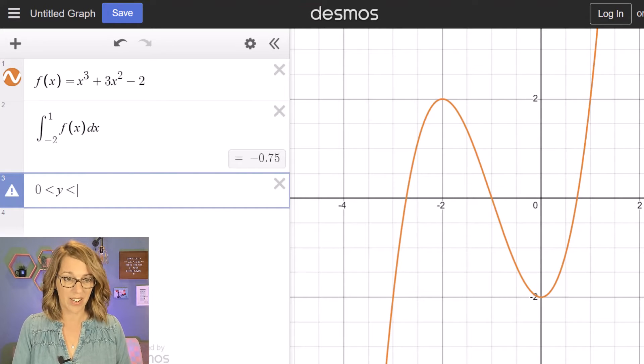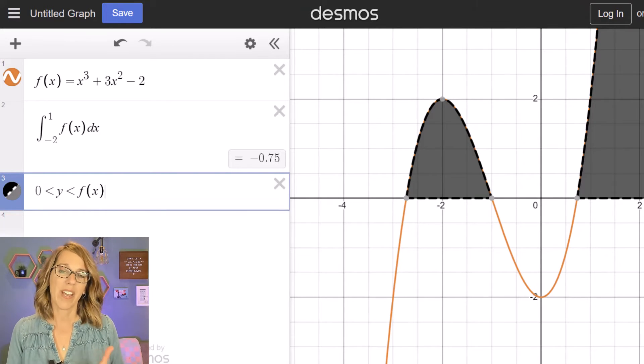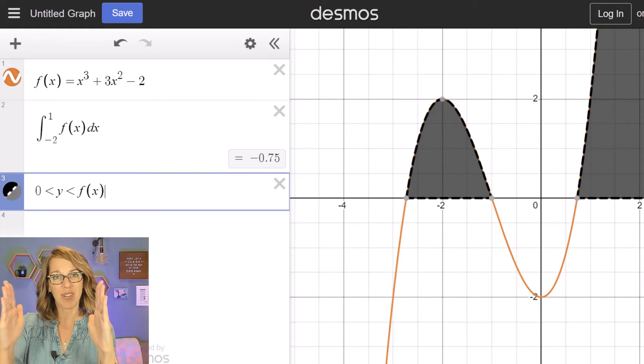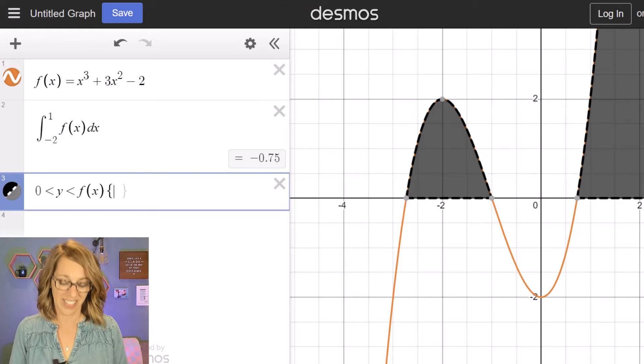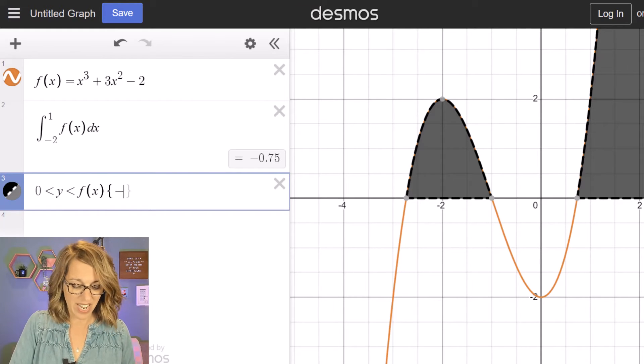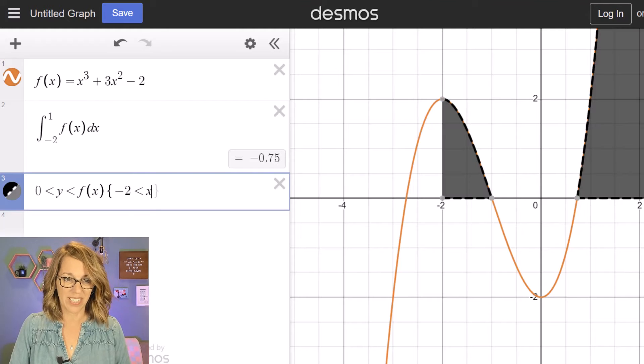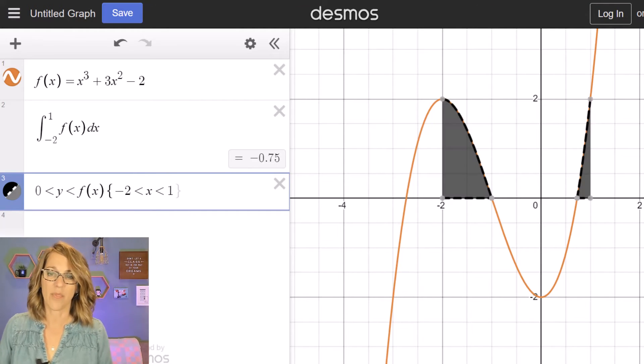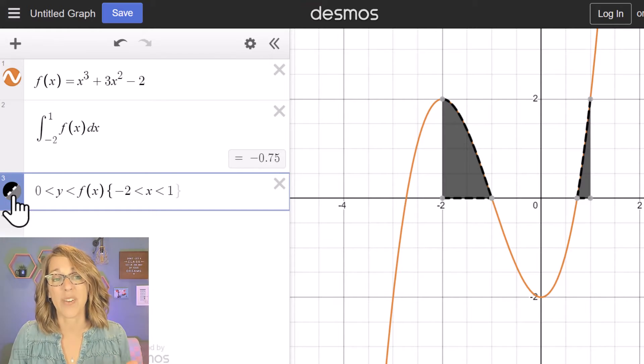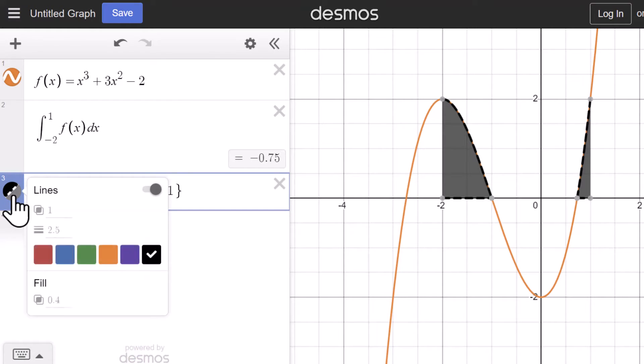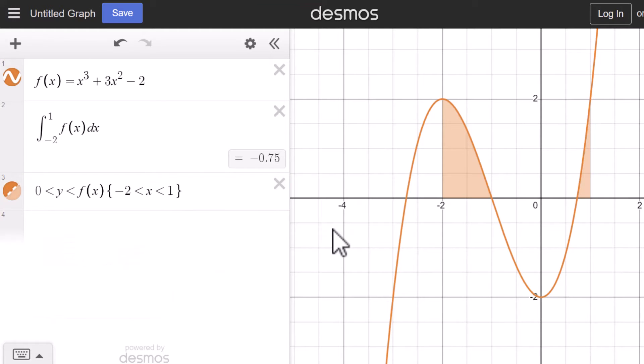Is less than my function, so f of x. But I also need to tell it that I'm between those limits of integration. So I'm going to use my set brackets, and for my set brackets it's going to be from negative 2. So negative 2 is less than x is less than 1. Now there's a couple of things that you'll notice. First of all, I really want the shading to be orange. So I'm going to click and hold on the circle next to this. Let's go ahead and change this to orange. I also want to get rid of the lines that go along with this, so I'm going to put a 0 there for the line width.